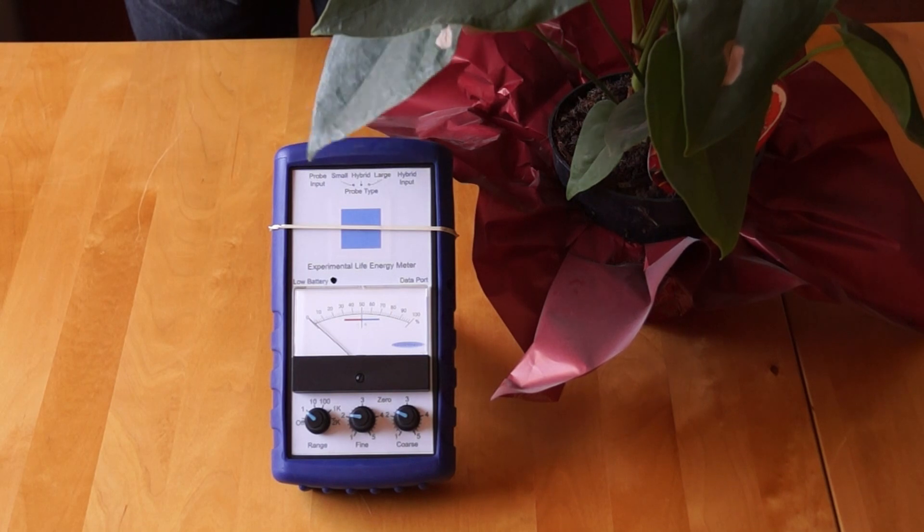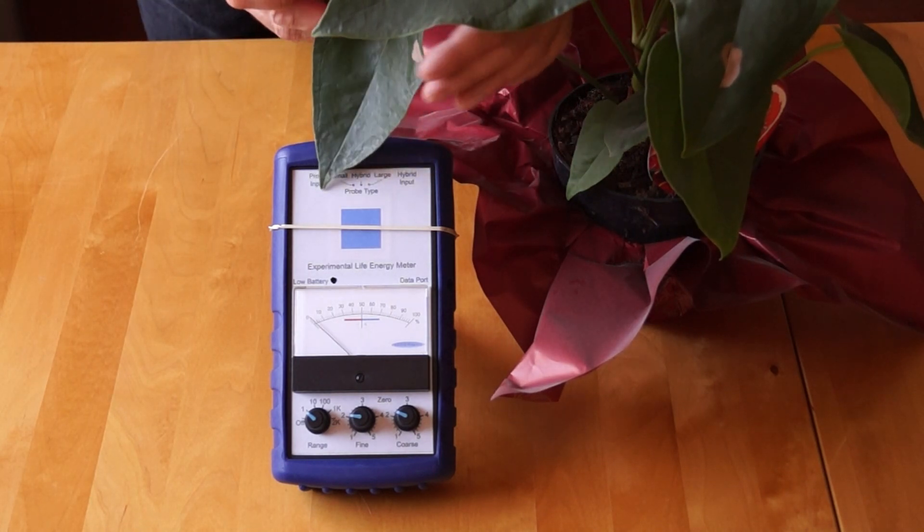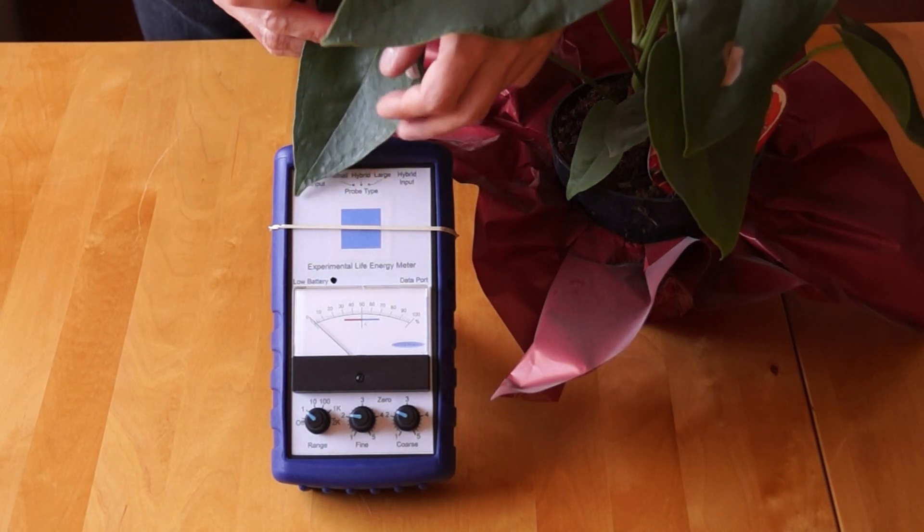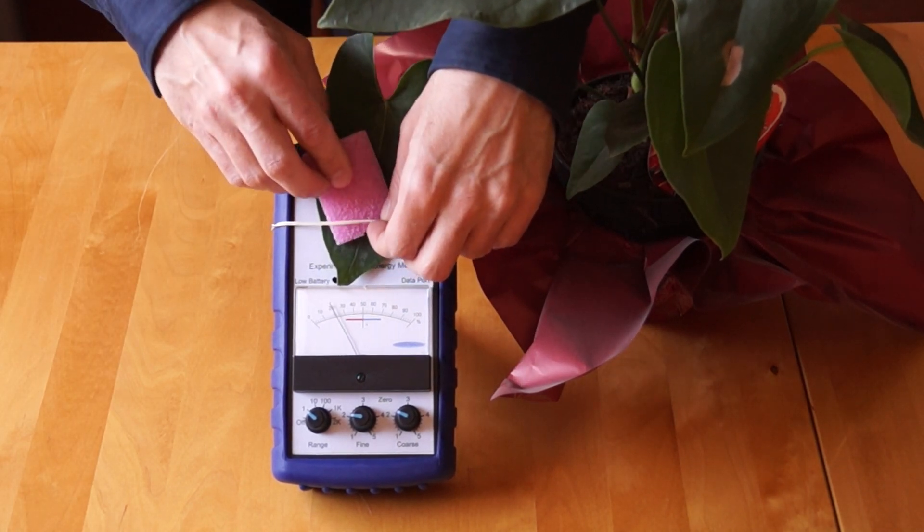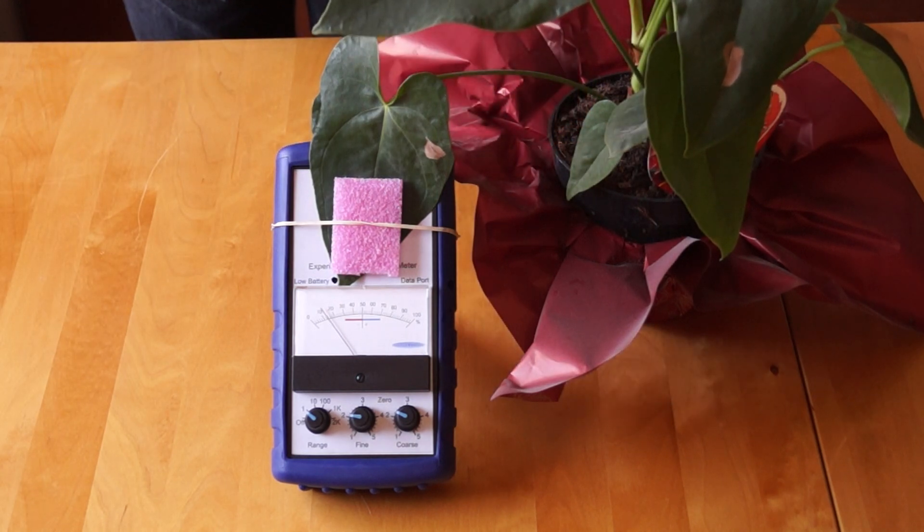Okay now testing a leaf from a plant. The plant, the soil is relatively dry. So this is the effect of the plant, not of the water in the plant. And you can see that once the plant is connected on times one, it's giving a deflection of about 13%.